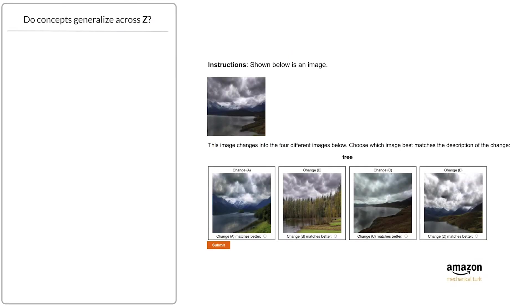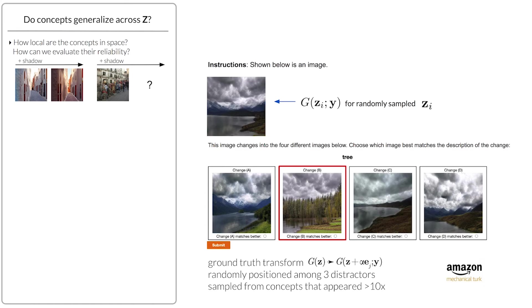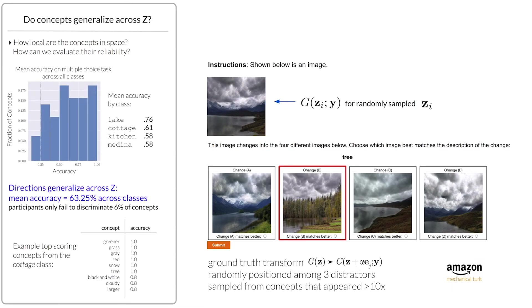We use a similar paradigm for all three experiments. Subjects discriminate a target concept, or combination of concepts, from distractors. To evaluate generalization across latent space, each concept is added to three different Z in a given class, and seen by five subjects. Distractors are sampled from remaining concepts that appeared more than ten times. 94% of concepts are recognized with above-chance accuracy, with a mean accuracy across classes of 63%.